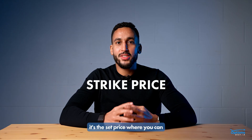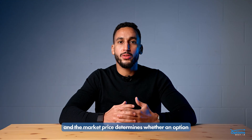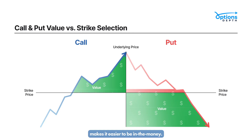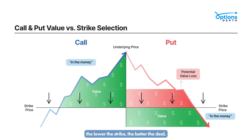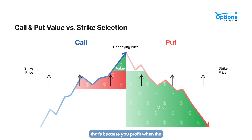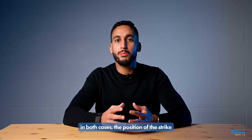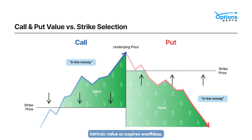The strike price is like a target — it's the set price where you can buy or sell the underlying asset. The relationship between the strike and the market price determines whether an option is in the money or out of the money at expiration. For Call options, a lower strike price makes it easier to be in the money, because you want the market price to rise above the strike — just like locking in a deal on a stock before its price climbs. For Put options, a higher strike price increases the chance of being in the money, since you profit when the market price falls below the strike. In both cases, the position of the strike compared to the current market price determines whether the option has intrinsic value or expires worthless.